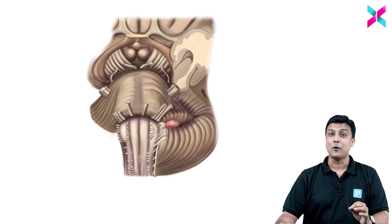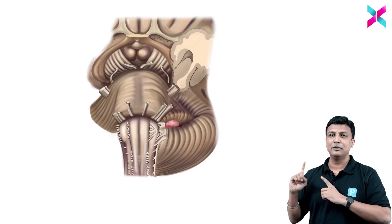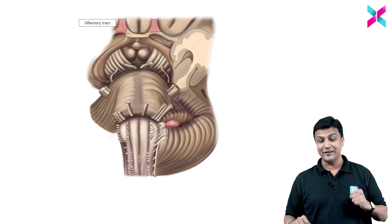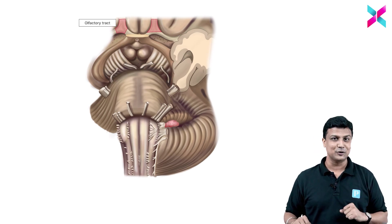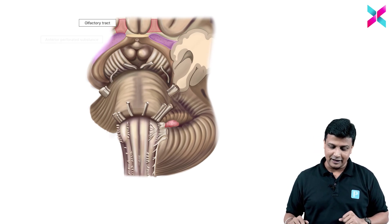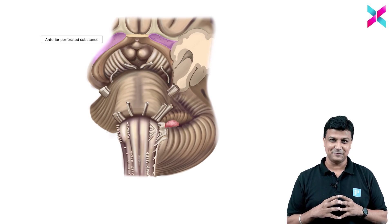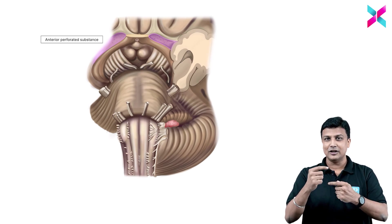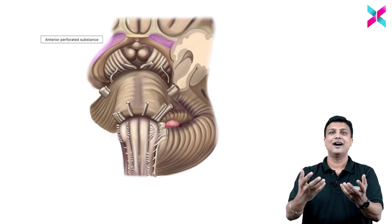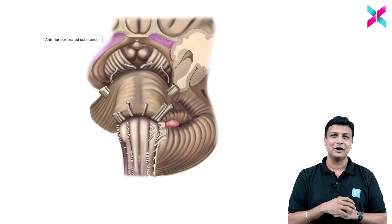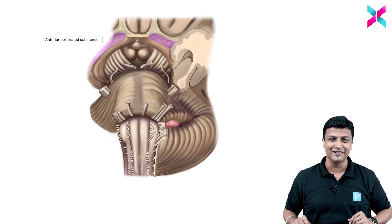So let us see all these structures one by one in this beautiful animation. Number one - yes, this structure is olfactory tract, just now I've shown you that one. And then after that, this structure here will be the anterior perforated substance. See, the moment I am actually highlighting the structure, you try to answer this one so that you yourself can get some more confidence.